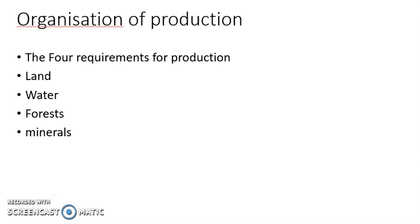There are four requirements for production. The first one is known as land. Land is a very important requirement for production. Land includes water, forest, minerals, etc. — these all we get from the land.